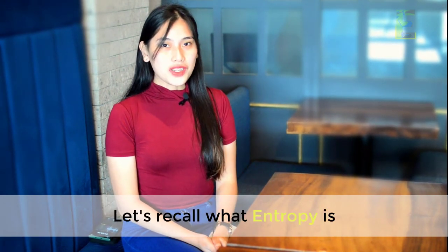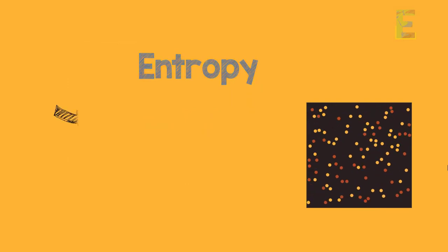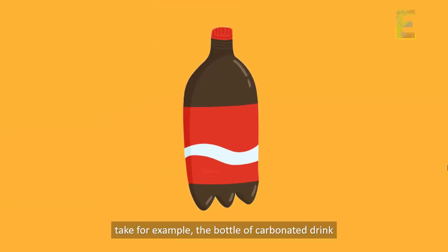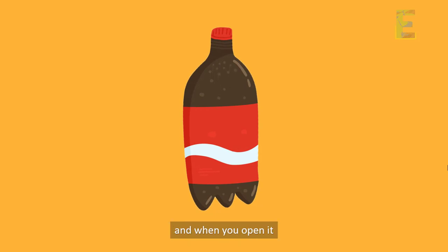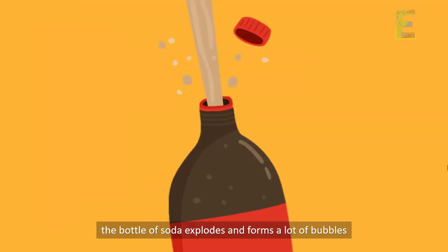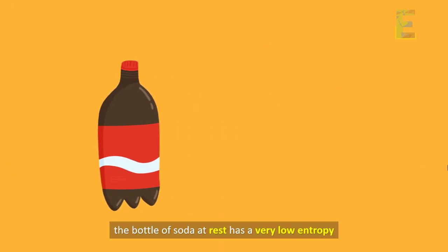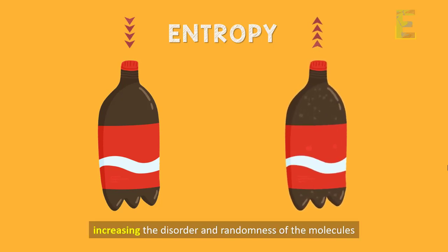But first, let's recall what entropy is. Entropy is the measure of disorder and randomness of a system. For better illustration, take for example a bottle of carbonated drink. When you shake it, you can see bubbles forming at the top surface, and when you open it, the bottle of coke explodes and forms a lot of bubbles — this is entropy. The bottle of coke at rest has a very low entropy, but the moment you shake it, you have introduced kinetic energy in the molecules inside the bottle, increasing the disorder and randomness of the molecules.